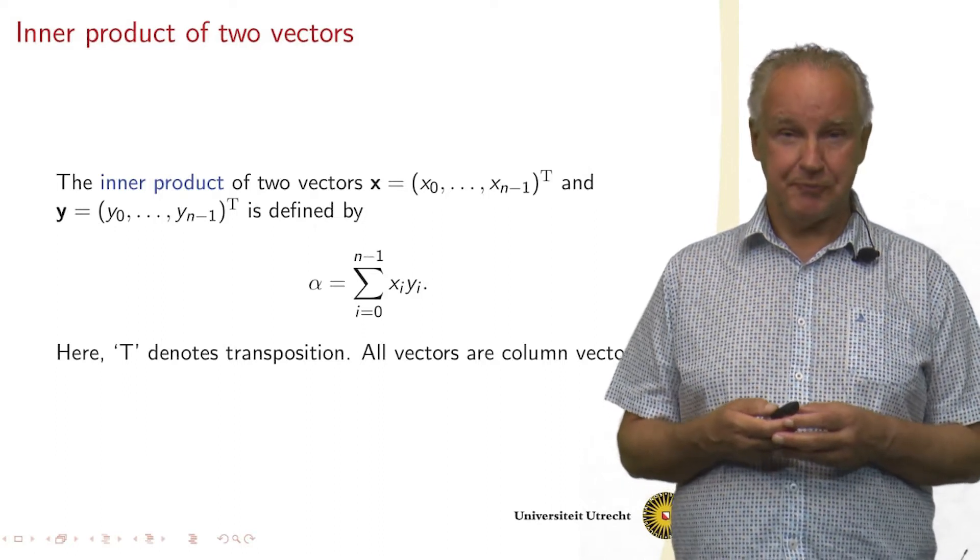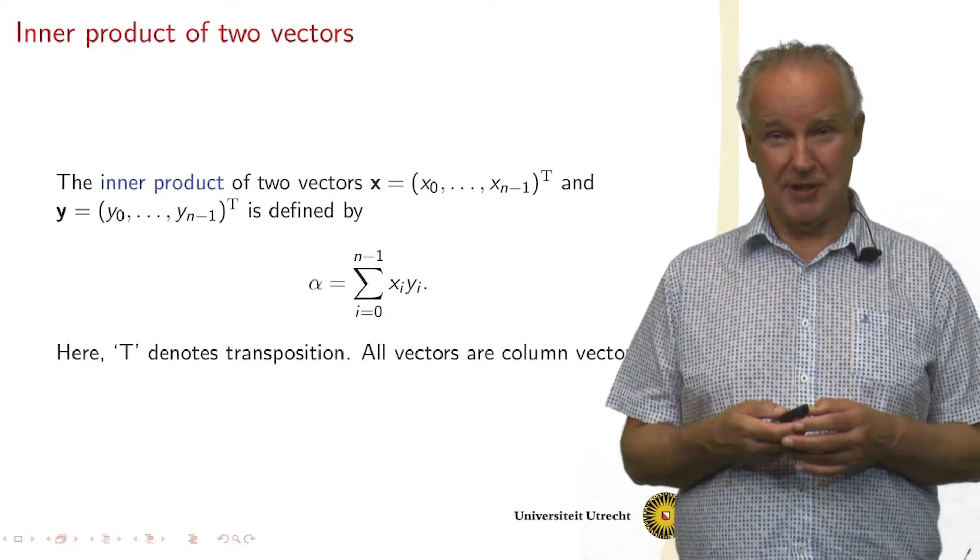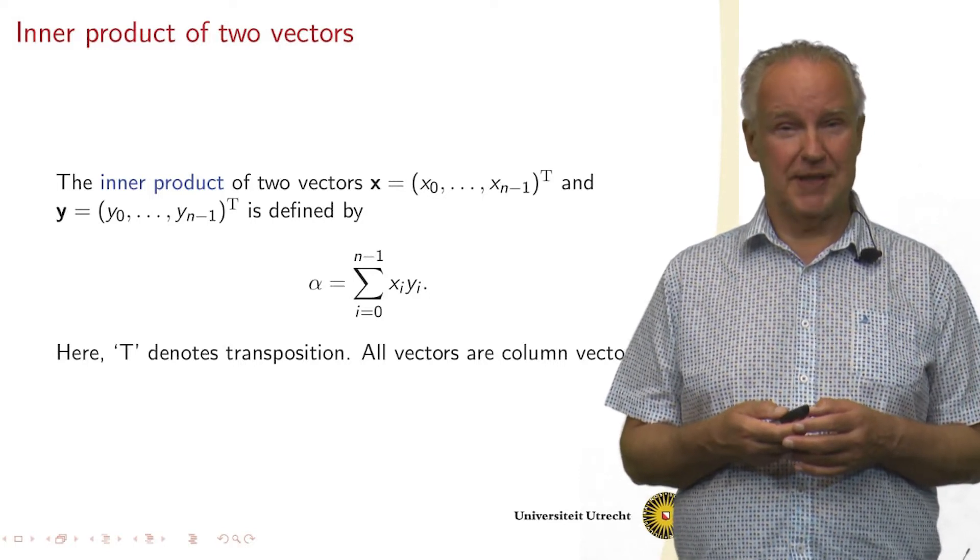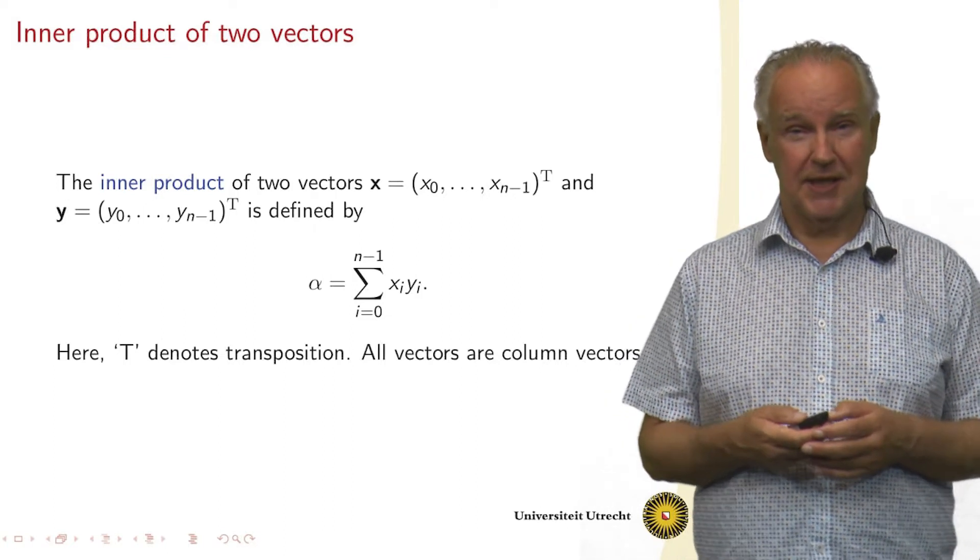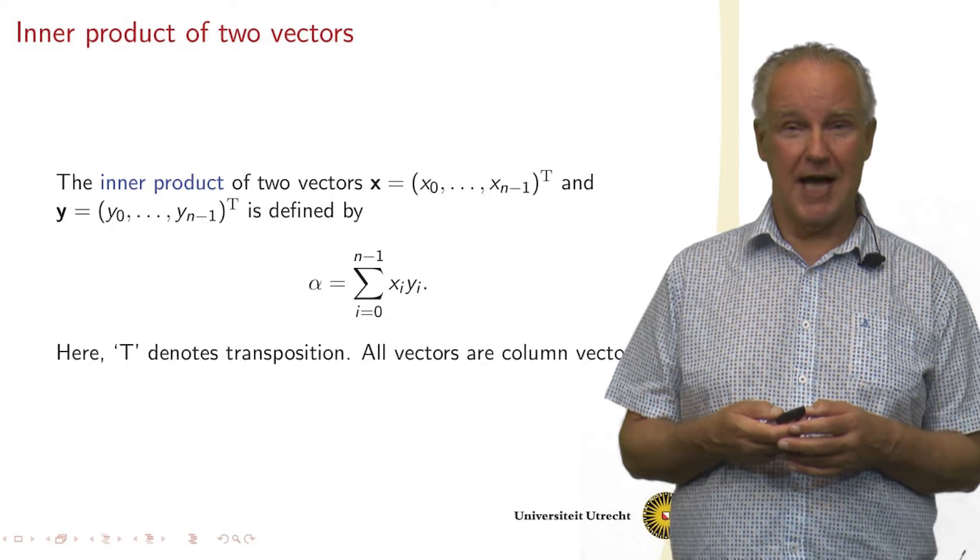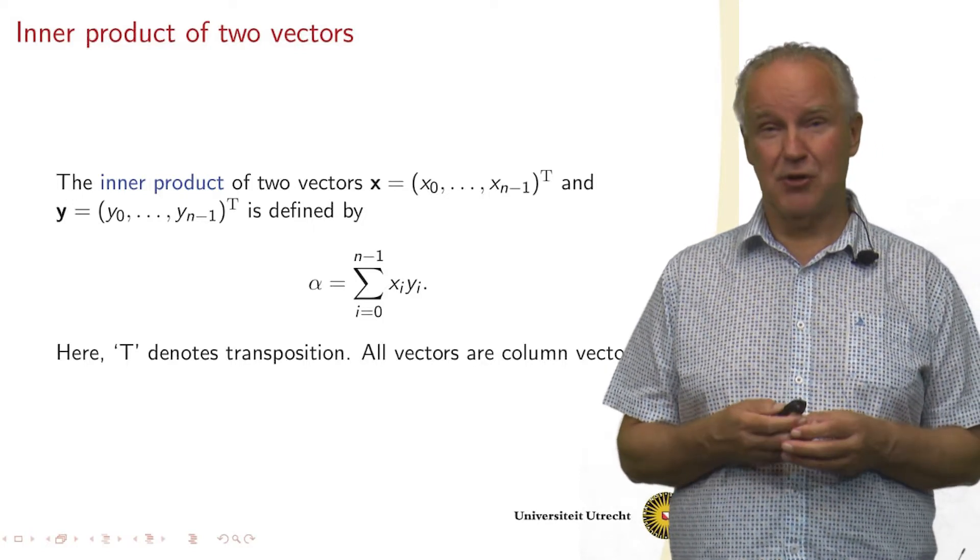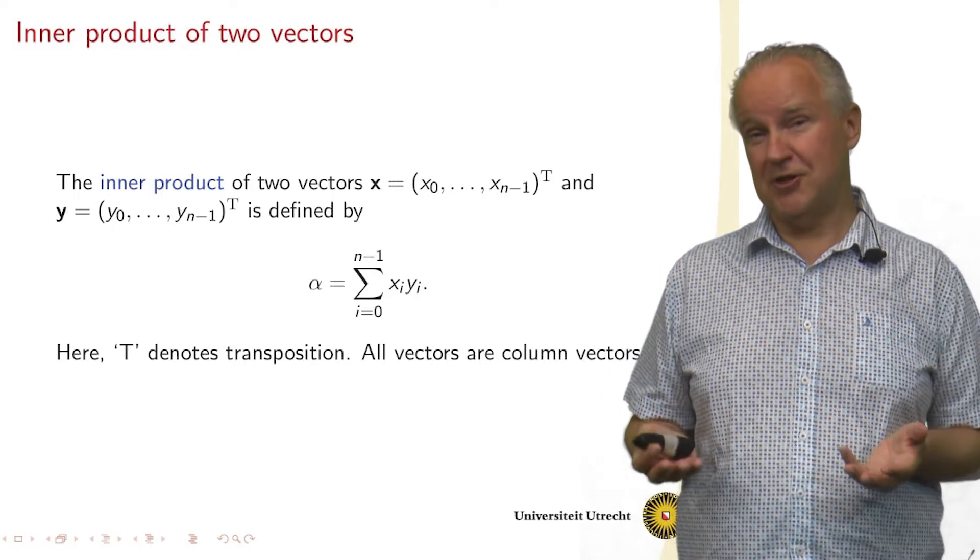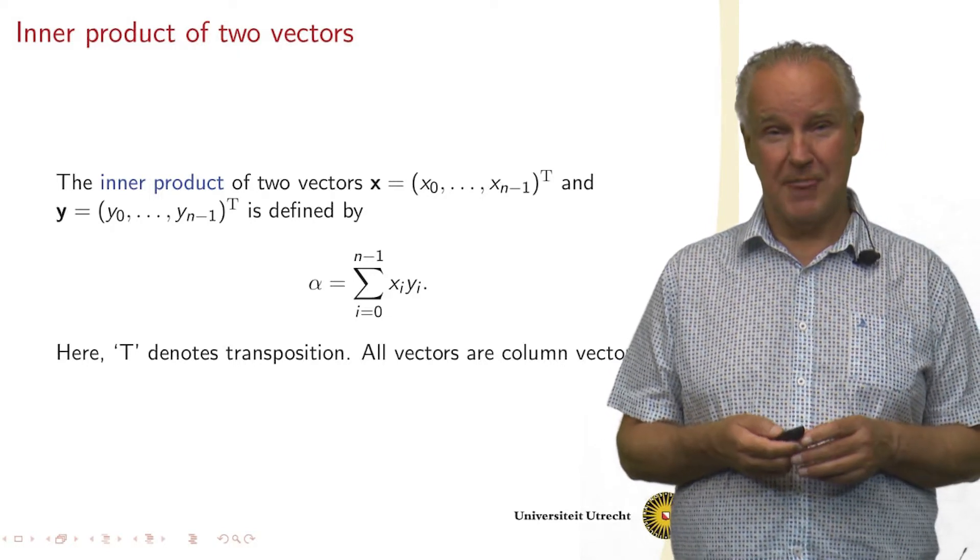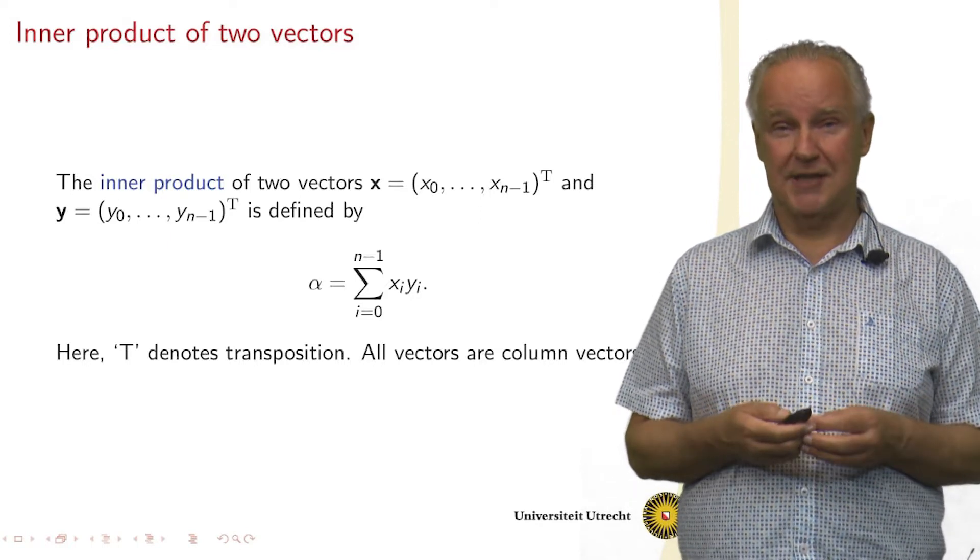So we have also a vector y with the same length, and we want to compute the sum of xi times yi, overall i between 0 and n minus 1. And the result we call alpha. So this is called the inner product of two vectors, and the difficulty is how do we do that in parallel.